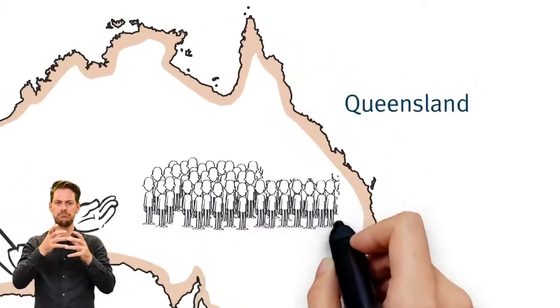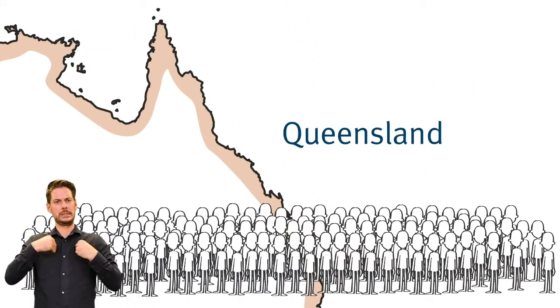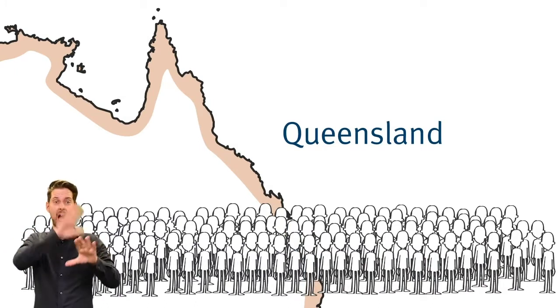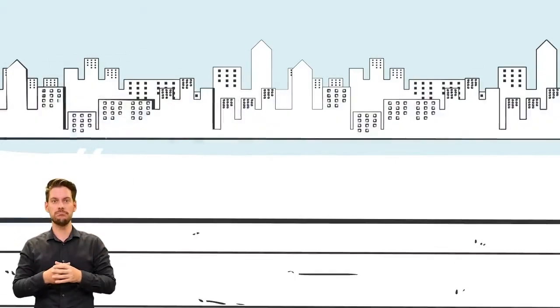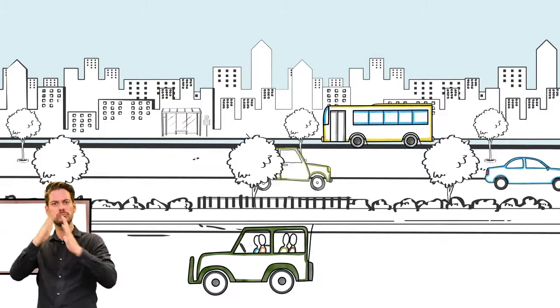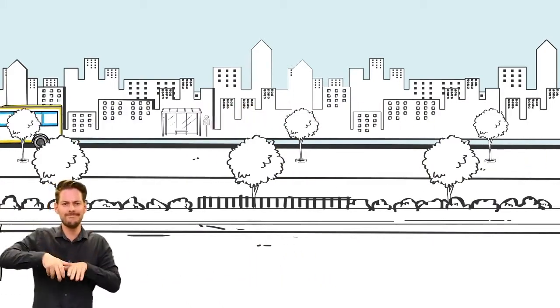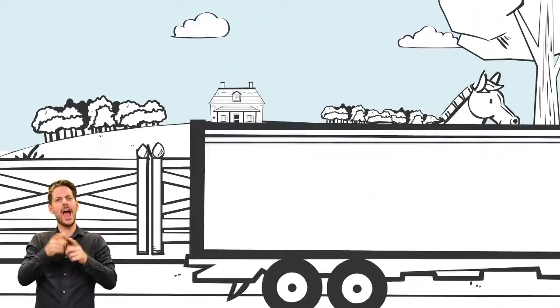Queensland has a growing population and economy and is the second largest state in Australia. Moving people and goods requires state-of-the-art, functional, and efficient transport infrastructure such as railways, highways, busways, and light rail.